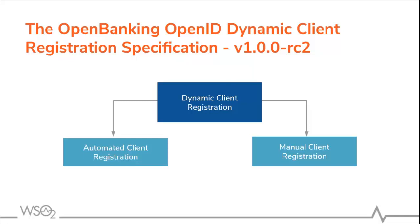The Open Banking OpenID Dynamic Client Registration Specification version 1.00RC2 is the first version of UK specification released for client registration in Open Banking UK. This specification specifies two mechanisms by which a primary technical contact for a trusted third party may submit a software statement assertion to an ASPSP for the purpose of receiving a client credential. This client credential enables access to the UK open banking APIs on behalf of the ASPSP customer.